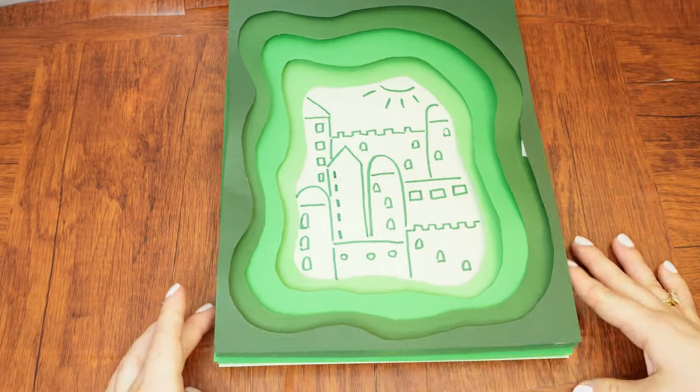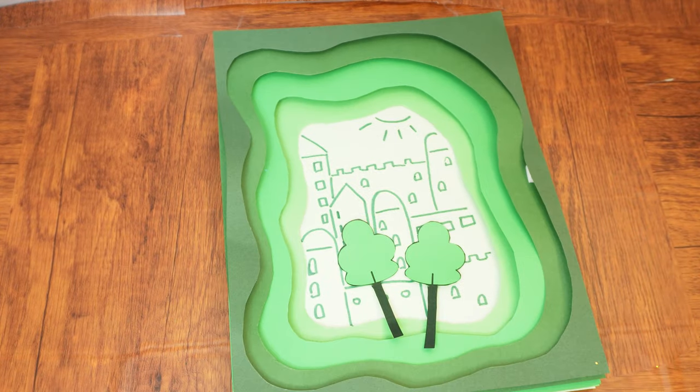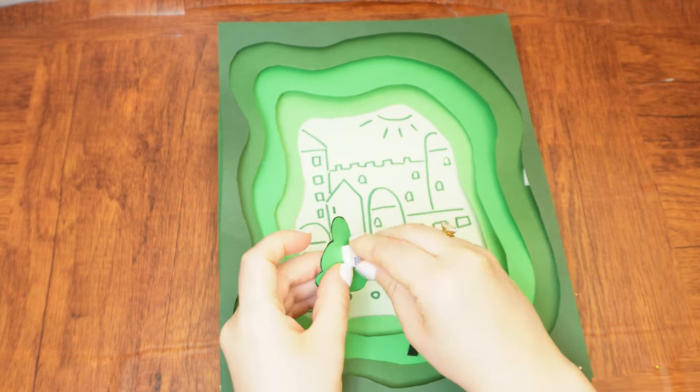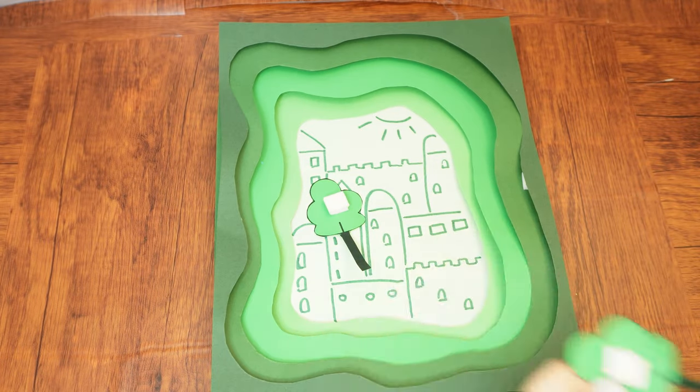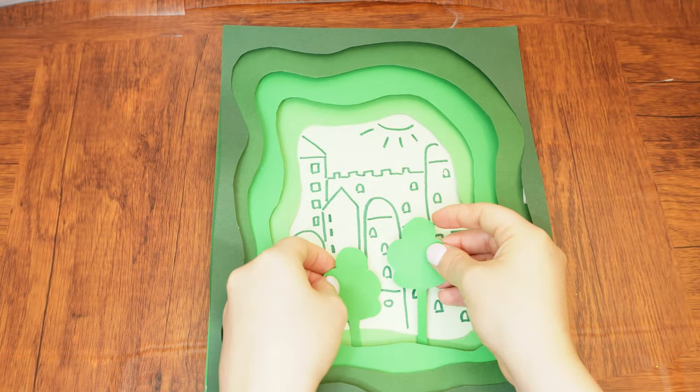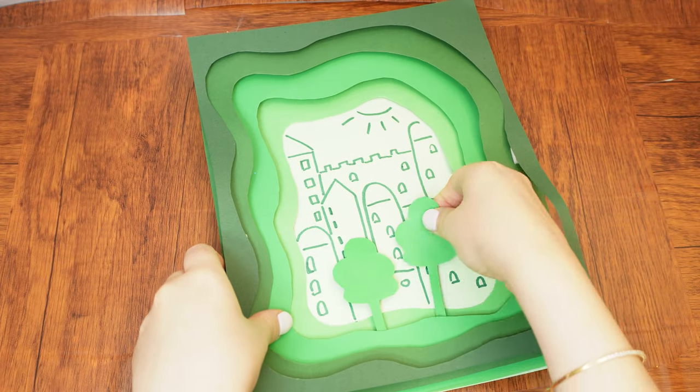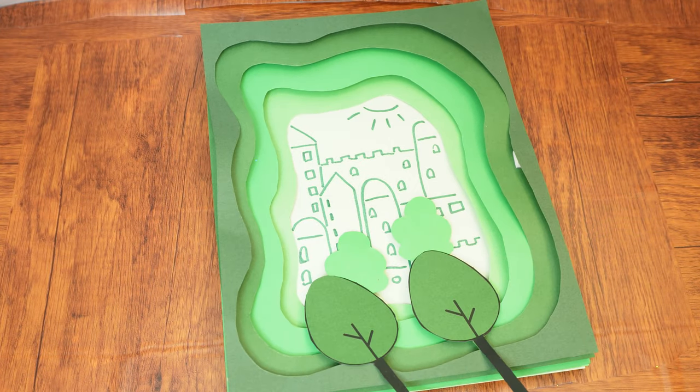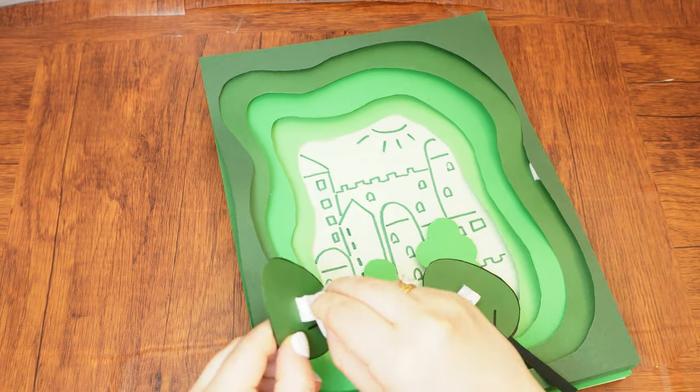Next, it's time to add the trees to the scene. Attach a foam sticker or two to each tree. For a clean look, place the sticker on the printed side. Attach the smallest trees first, sticking them somewhere near the middle at slightly different heights. Tuck their trunks between the layers of the first and second cutouts.